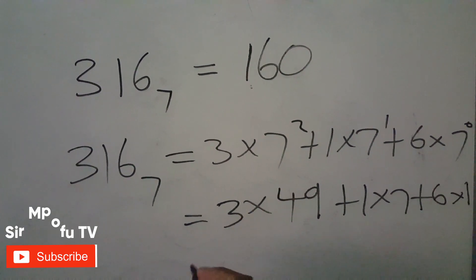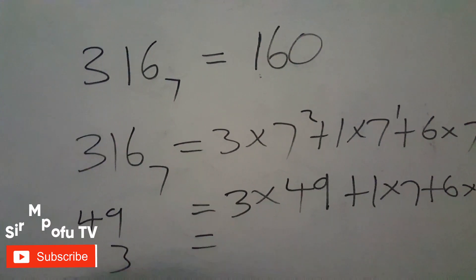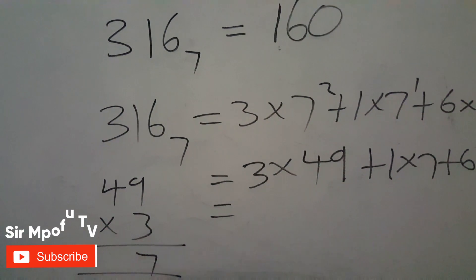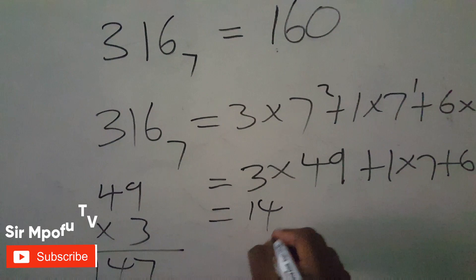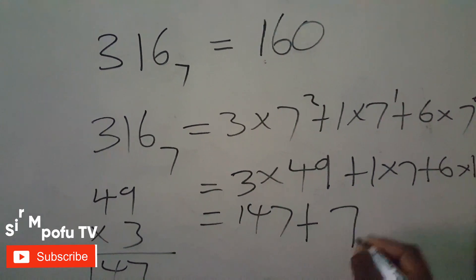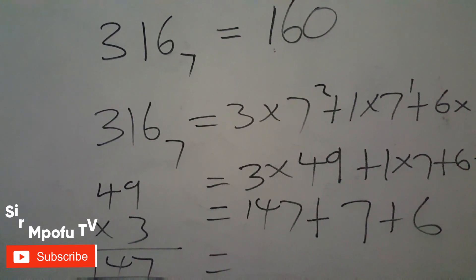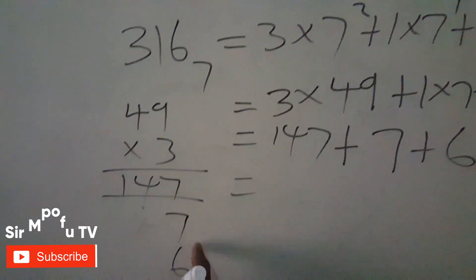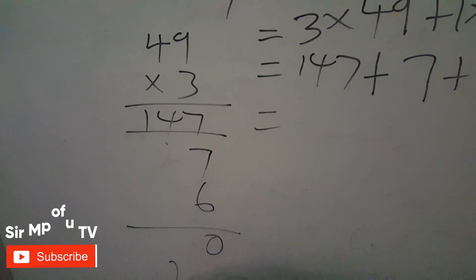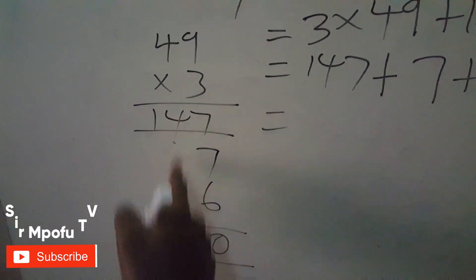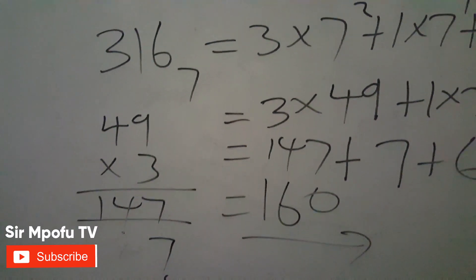Let me do it manually: 49 times three. Seven times three is 21, carry two — that gives 147. Then 147 plus seven plus six: seven plus seven is 14, plus six is 20, write zero carry two — giving 160. You can see we still get the same answer: 160.